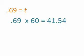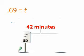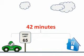T is represented in hours. .69 of one hour or 60 minutes equals 41.54. When I round 41.54, I get approximately 42 minutes that it will take me to drive 45 miles home at 65 miles per hour.